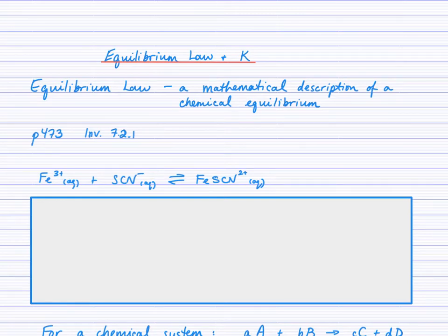Today's lesson explores a mathematical relationship between the concentrations of the reactants and products at equilibrium. It's called the equilibrium law, and if you have a look at page 473 of your textbook, Investigation 7.2.1.